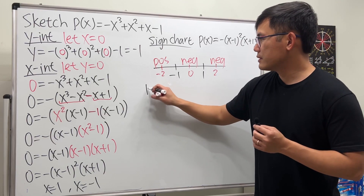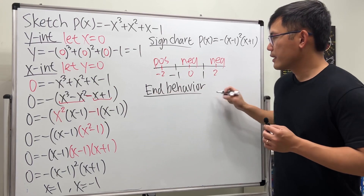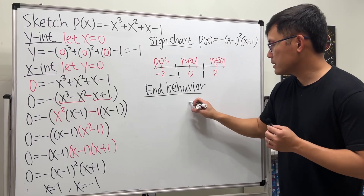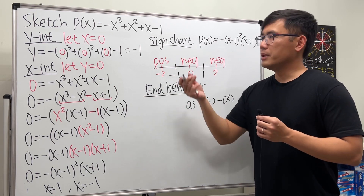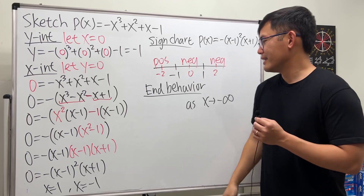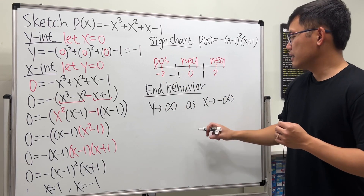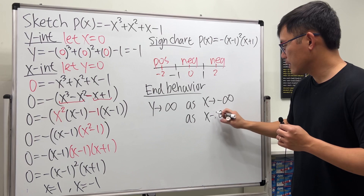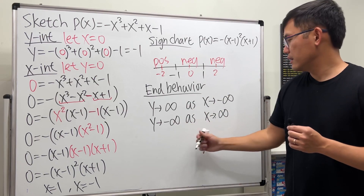Now let's talk about the end behavior. We look at what happens to the left and right. As x goes to negative infinity, y approaches positive infinity — the graph goes up on the left. On the other hand, as x goes to positive infinity, y goes to negative infinity — the graph goes down on the right. For polynomial graphs there's no horizontal asymptote; it's either going up or going down.